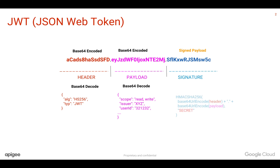The signature is actually encrypted and signed using a secret that the server keeps secret. It can verify the JWT token whenever the client presents it at a later point of time.